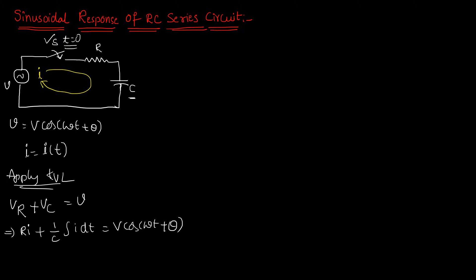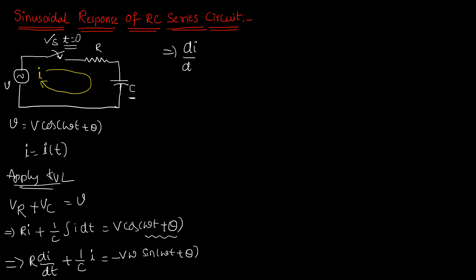I am going to differentiate this entire equation with respect to t. Doing so gives R·(di/dt) + (1/C)·i = V·ω·(−sin(ωt + θ)), since the differential of cosine gives minus sine. Dividing the entire equation by R, we get di/dt + (1/RC)·i = −(Vω/R) sin(ωt + θ). Call this equation 1.